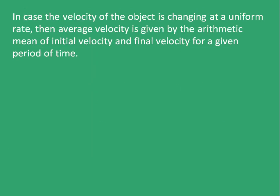In case the velocity of an object is changing at a uniform rate, then velocity is given by the arithmetic mean of initial velocity and final velocity for a given period of time. So let's say we have point A and point B. An object starts moving from point A to point B. Initially, the object has velocity U and when it reaches point B, it has velocity V.